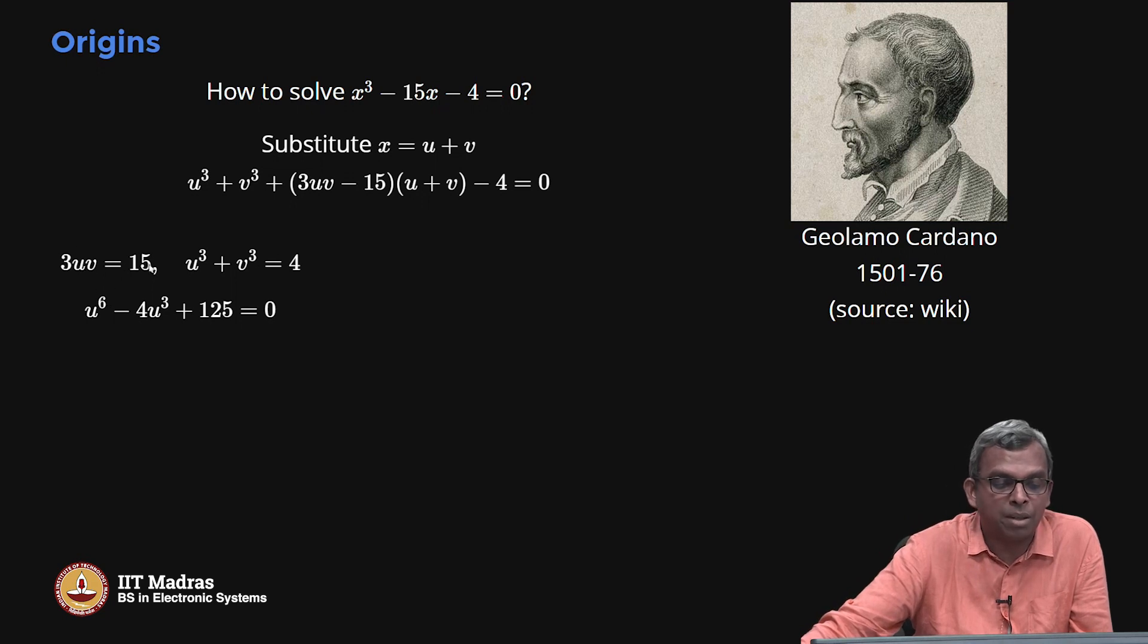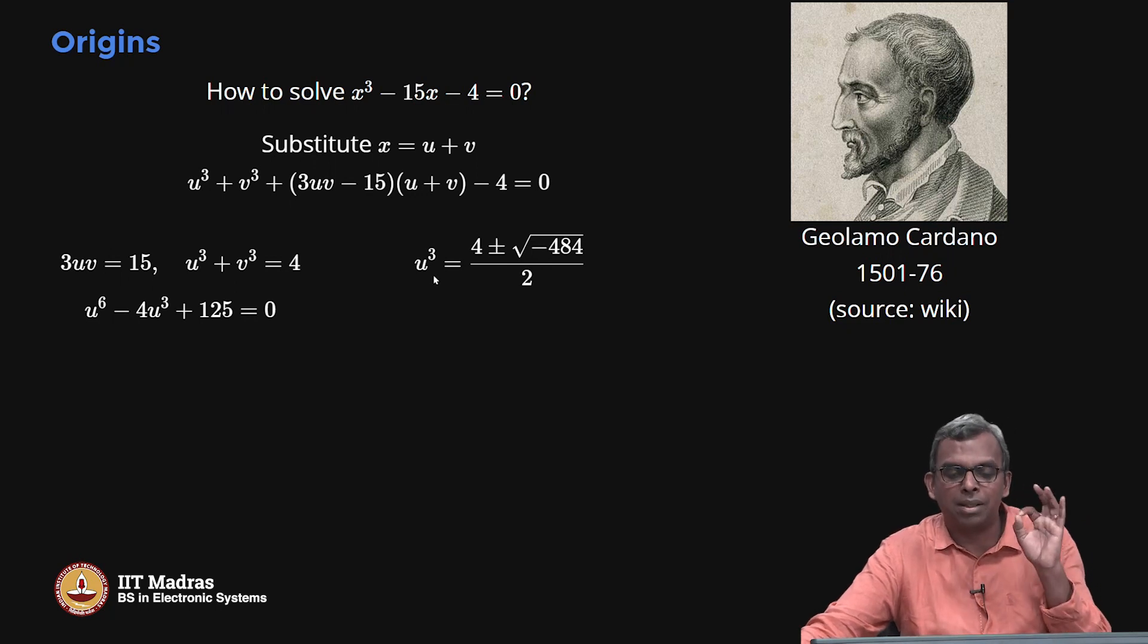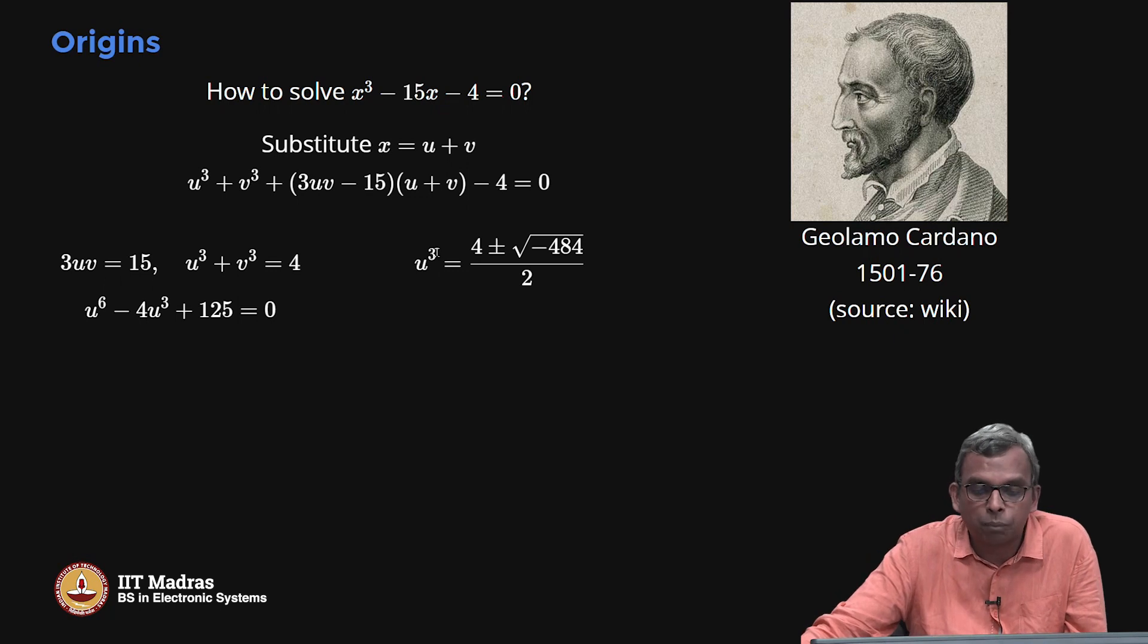Why is this equation solvable? It is quite easily solvable. You put v = 5/u, you will get u⁶ - 4u³ + 125 = 0. This equation looks like 6 power, but it is actually only a quadratic in u³. He came up with the solution, but here is where something strange happened. This quadratic does not have proper roots. It has square root of minus 484. b² is just 16, 4ac is minus 4 times 125 is minus 500, 16 minus 500 is minus 484. Here you get stuck. You think I cannot solve this and you give up.